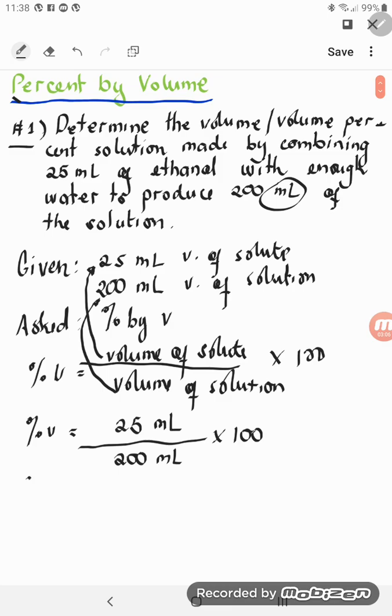Let's proceed to the next one. Percent by volume, so 25, cancel first the ml before anything else, and then 25 divided by 200.